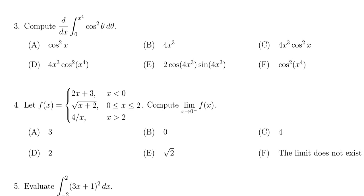In this video we provide the solution to question number three for the practice final exam for math 1210. We're asked to compute the derivative of the integral from zero to x to the fourth times cosine squared theta d theta.